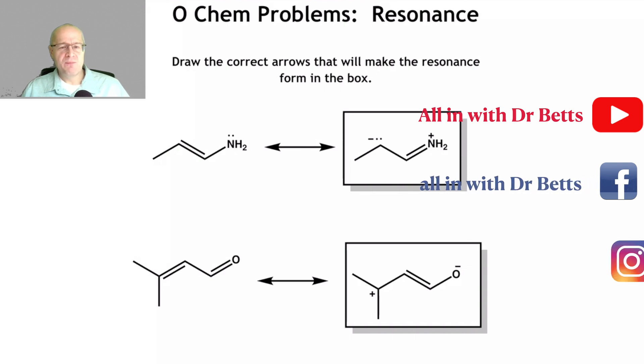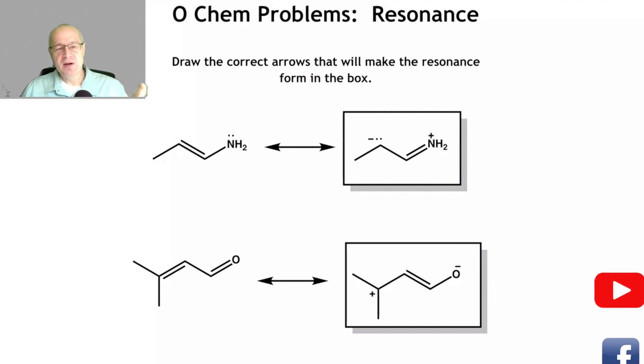Draw the correct arrows that will make the resonance form in the box. So this question is all about drawing in the correct arrows. You have to choose the correct arrow and put them on the drawing correctly.